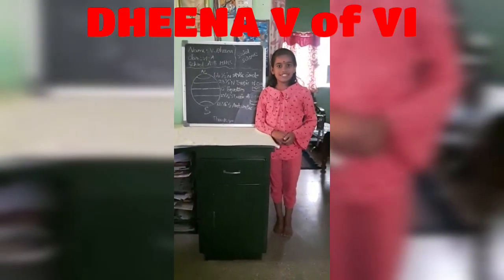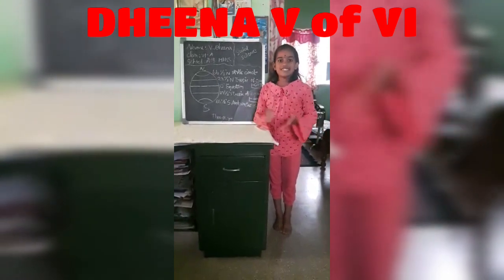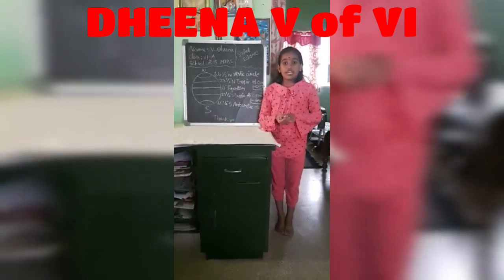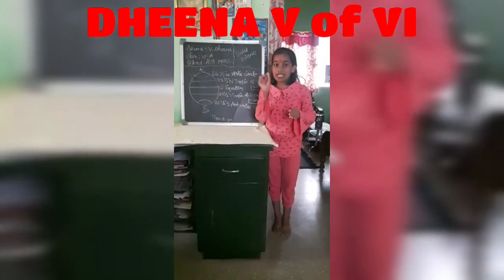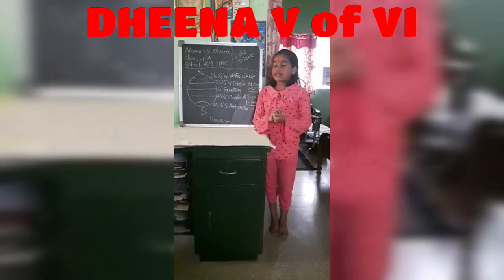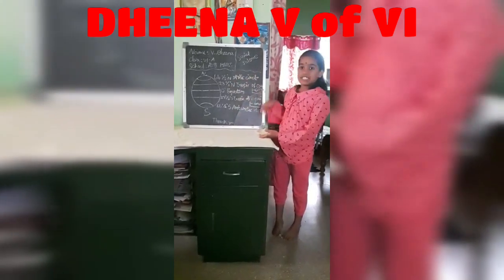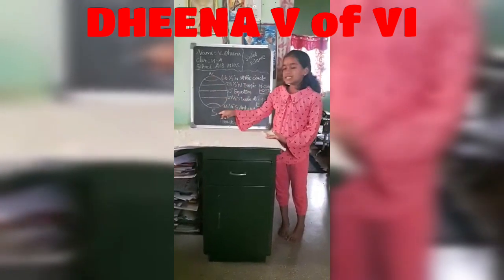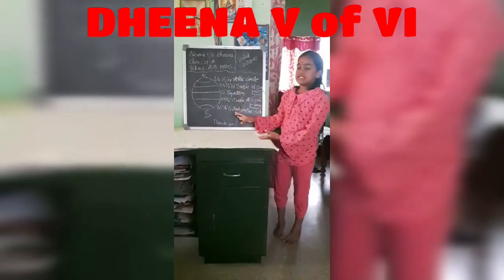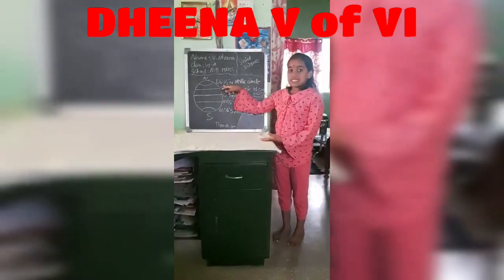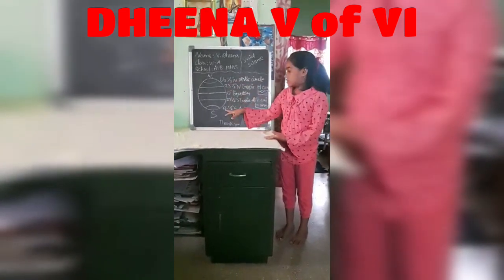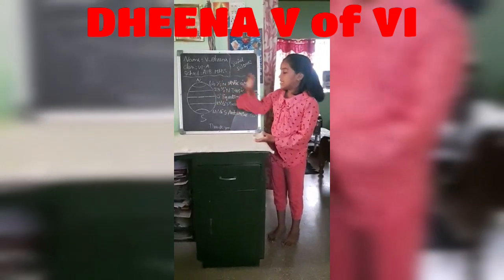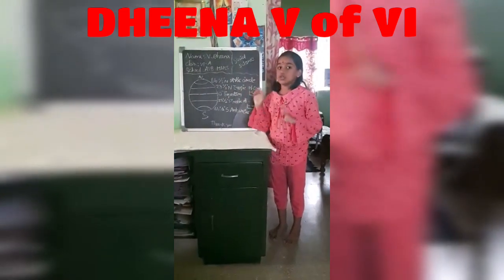Hello students, welcome to this class. I am Vidina, 6A, from ABB Medication and Secondary School. Today let us see the globe legend and the topic of important latitudes. There are five important latitudes. You can see in the diagram: up is north, down is south. 66 and a half degrees north and 66 and a half degrees south — the degrees are the same but the poles are different.